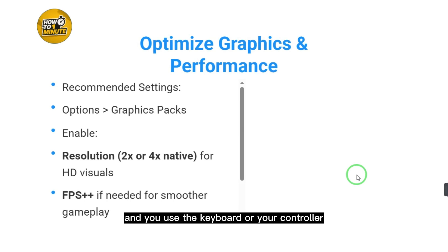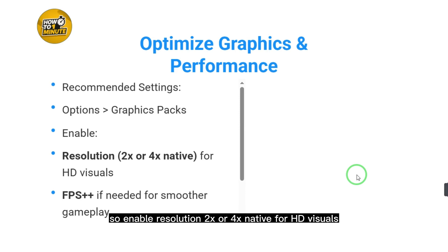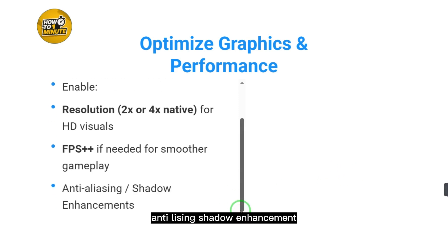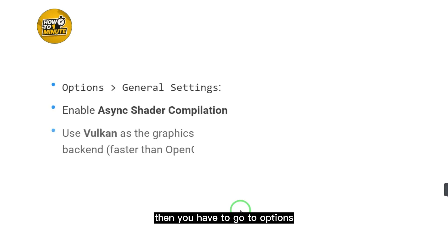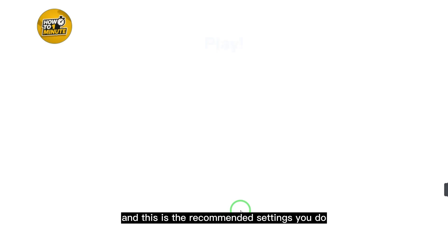Next, optimize graphics and performance. These are the recommended settings, but you can adjust to your choice. Go to Options and then Graphic Packs. Enable resolution 2x or 4x native for HD visuals, FPS++ if needed for smoother gameplay, anti-aliasing, and shadow enhancement. In General Settings, enable async shader compilation and use Vulkan as the graphics backend — it is faster than OpenGL.